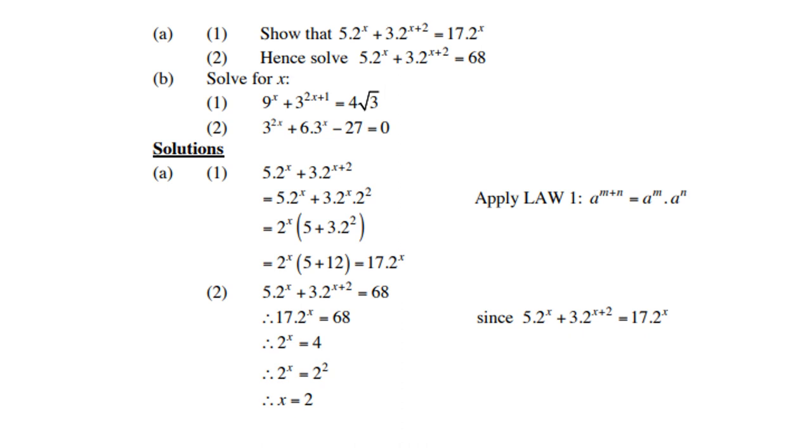In B, solve for x if 9 to the power x plus 3 to the power 2x plus 1 equals 4 times square root of 3, and secondly if 3 to the power 2x plus 6 times 3 to the power x minus 27 is equal to 0.